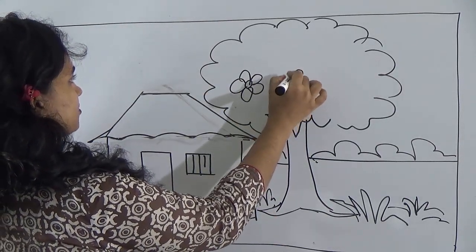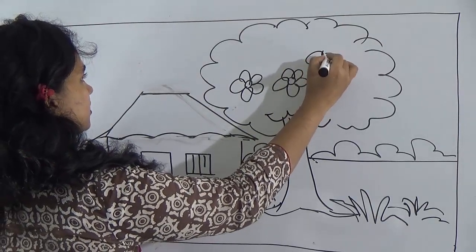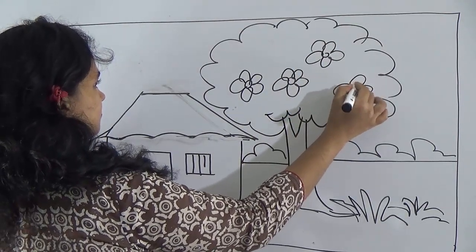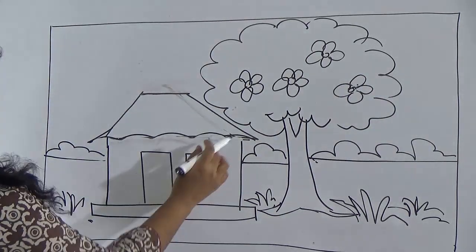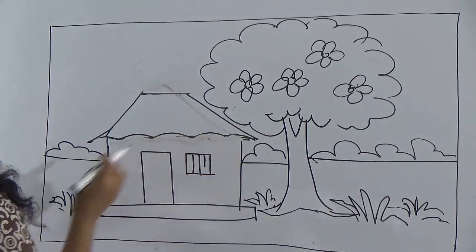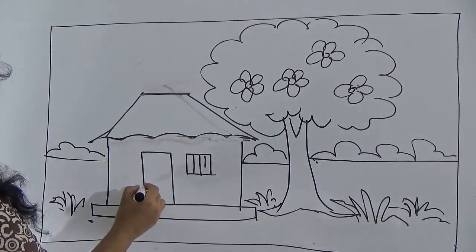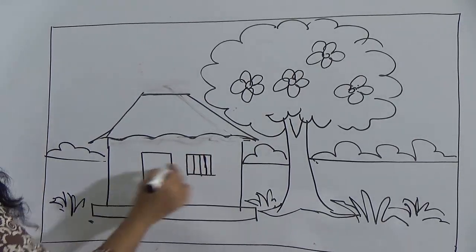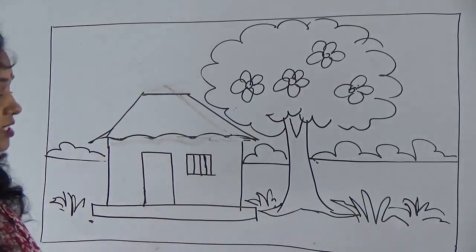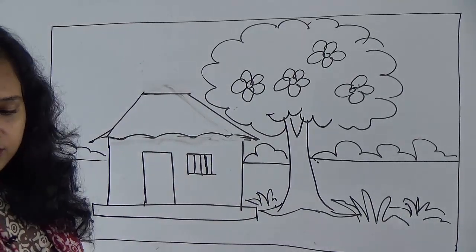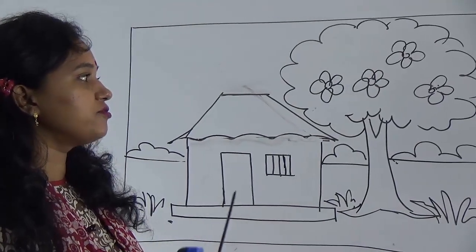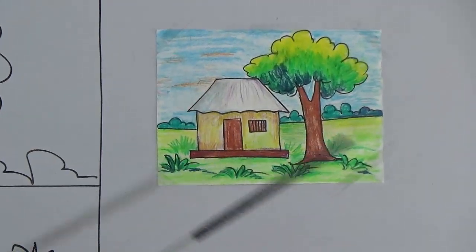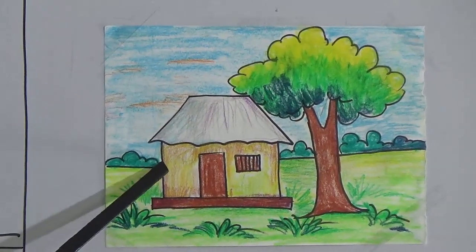If you want, you can add some flowers also — this is not mandatory. So dear student, I hope you all have understood how to draw the house and tree. Look at the board — I have already colored a picture for you.